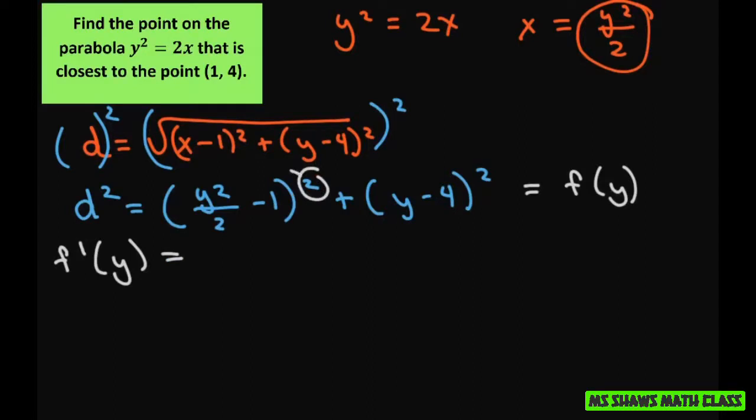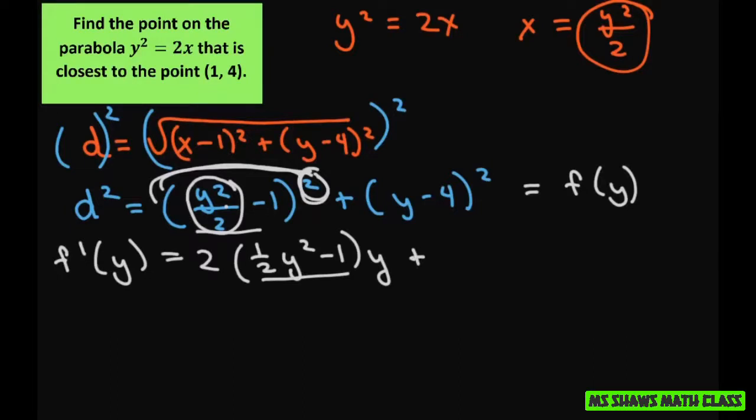and you just do your chain rule. That's going to be 2. And differentiate that. So that's 1 half y squared minus 1 times the derivative of this is just y. Because the 2's will cancel. So I did the outer function and copied this in. Then I took the derivative of the inner function, which is just y. y plus, and do this one, 2 times y minus 4. And the derivative of y is just 1.